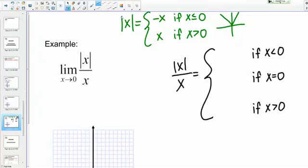What happens when X equals 0? If I plug in X equals 0 to my function, I get 0 over 0. The function is not defined here.